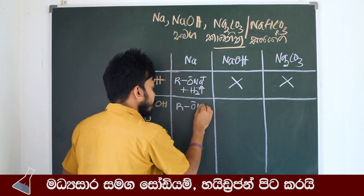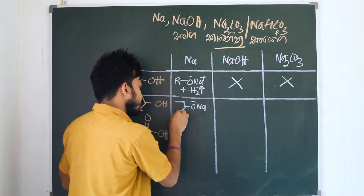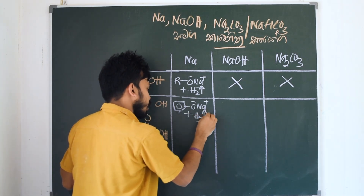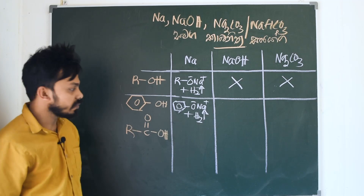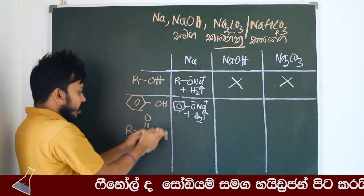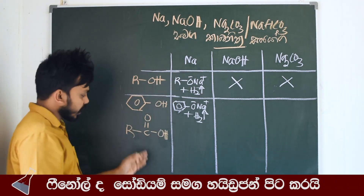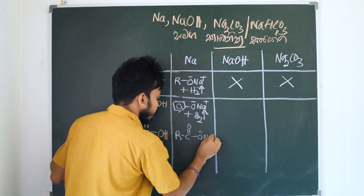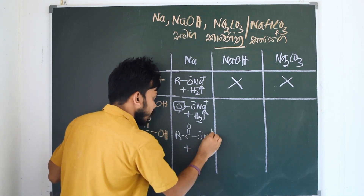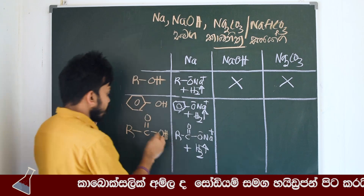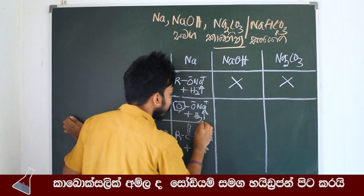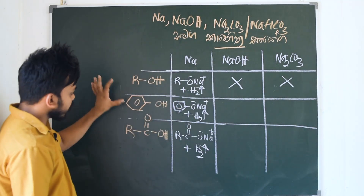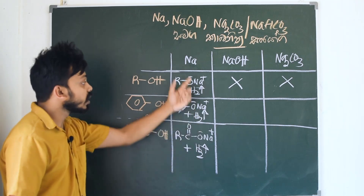Then we will add phenol to the phenol. We will add sodium to the phenol. Sodium, phenol, carboxylic — so we can add hydrogen.